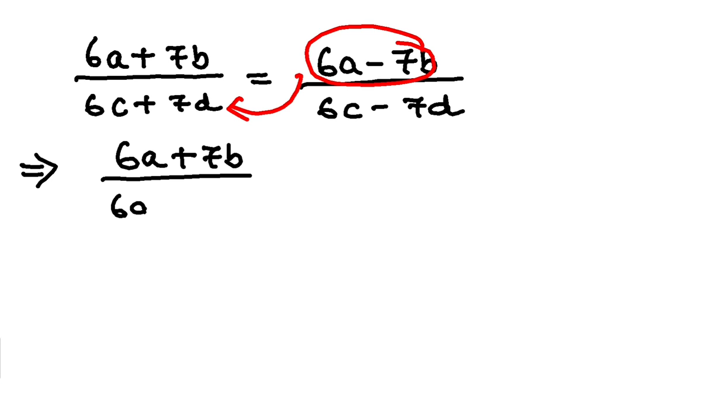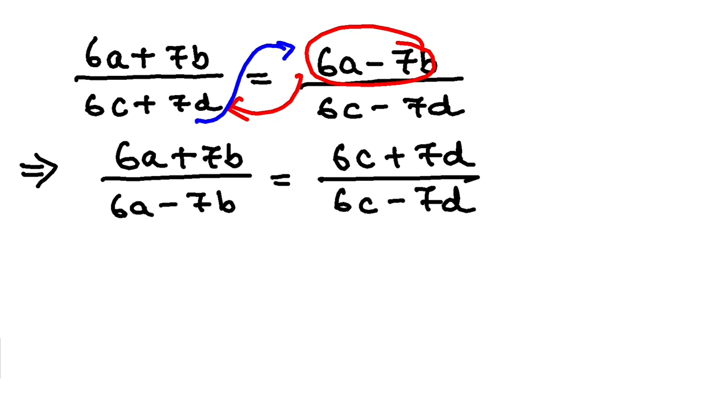So I will have 6a minus 7b is equal to, so obviously this will go up over here. So we have 6c plus 7d by 6c minus 7d, isn't it?